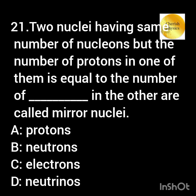Two nuclei having the same number of nucleons, but the number of protons in one of them is equal to the number of neutrons in the other, are called mirror nuclei.